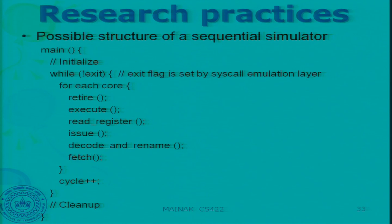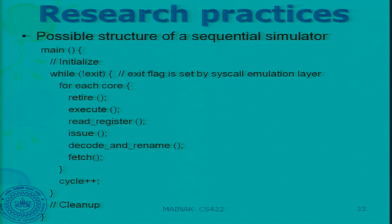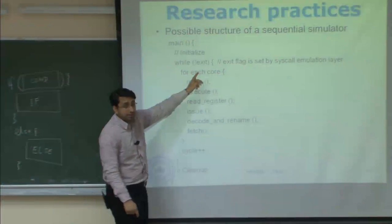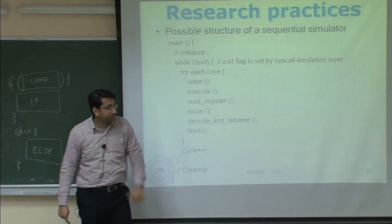Here is the structure of a sequential simulator — its main function. It initializes a bunch of states, though this is oversimplified; a real simulator is several hundreds of thousands of lines of code. Then it runs a while loop (while not exit), where the exit flag is set by the system call emulation layer when the program exits.